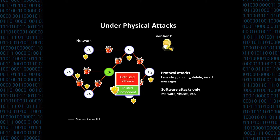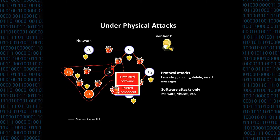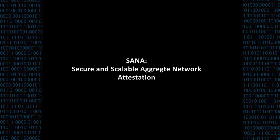Based on this, the verifier can trust any device on the network — for example, D3 — to attest its neighbors. But if D3 is physically attacked and its trusted component is compromised, the secrets of D3 are leaked. Then the neighbors of D3 that are software-compromised will evade detection by the verifier. This is the main problem that SANA aims to mitigate.